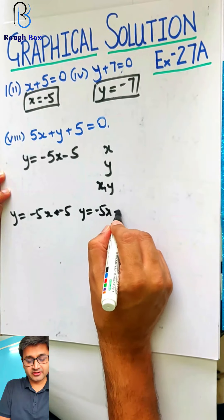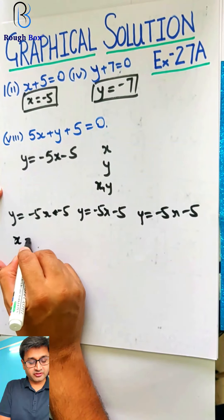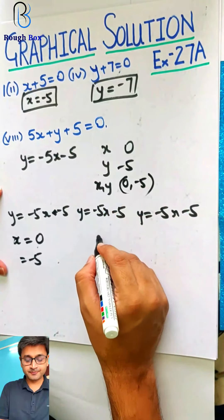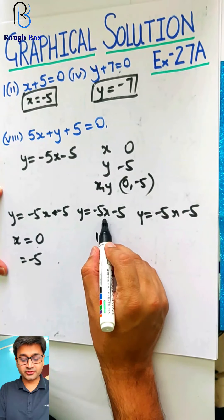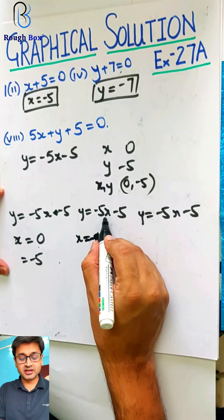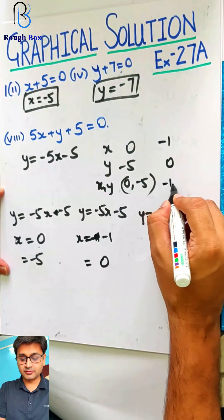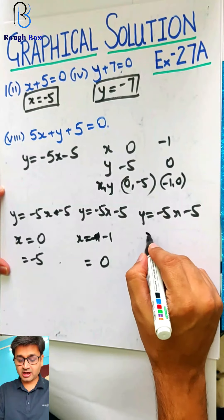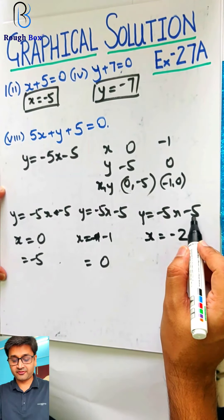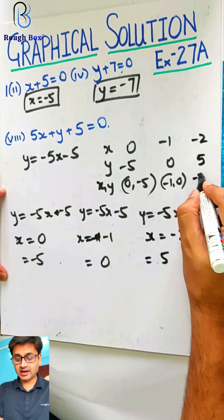So y is equal to minus 5x minus 5. Assume x as 0: so minus 5. The point (0, minus 5) becomes my first point. Assuming x as 1: minus 5 minus 5 — too big. So I'll assume x as minus 1: plus 5 minus 5 gives 0. So (minus 1, 0) becomes my second point. Now assuming x as minus 2: plus 10 minus 5 gives plus 5. So (minus 2, 5) is my third point.